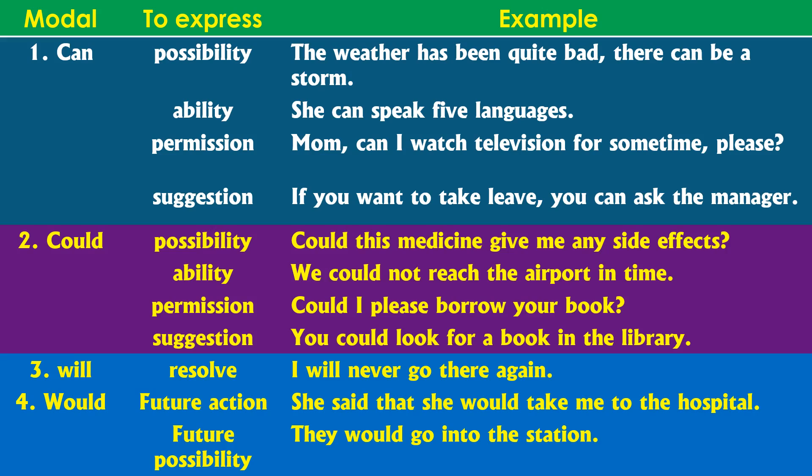The next modal is 'could,' which is the past form of 'can,' and it is used for the same four expressions. For possibility: 'Could this medicine give me any side effects?' For ability: 'We could not reach the airport in time.' For permission: 'Could I please borrow your book?' For suggestion: 'You could look for a book in the library.' These are the uses of 'could' in the past context.